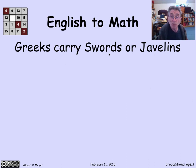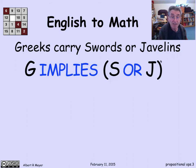Greeks carry swords or javelins. If I was transcribing this into precise math notation, I could say G for Greeks implies S for swords or J for javelins. So this is an assertion that if you're Greek, then you carry a sword or a javelin. That's how we're going to translate this sentence using these operators.